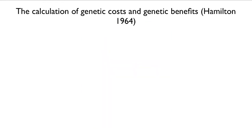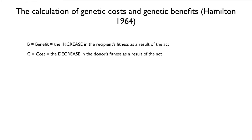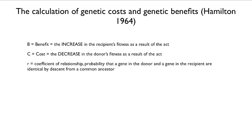In 1964, as a graduate student, Bill formulated the idea of genetic costs and benefits of acts. The benefit is the increase in the fitness of the recipient of the act; the cost is the decrease in the donor's fitness. R is the coefficient of relationship — the probability that a gene in the donor and a gene in the recipient are identical by descent from a common ancestor. R is 0.5 for mother-offspring and for siblings, and 0.25 for half-siblings.